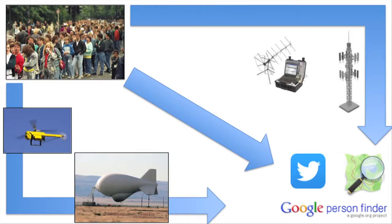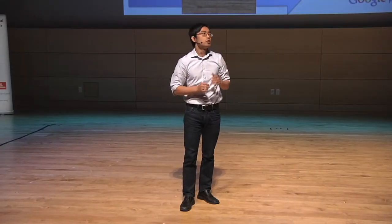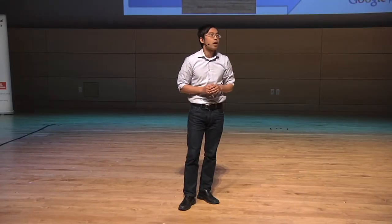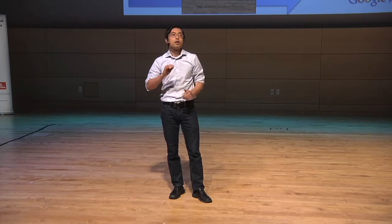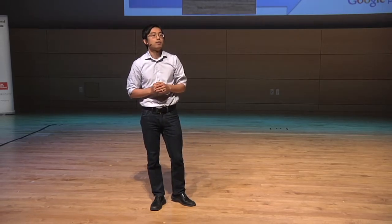We already have some great tools like Google Person Finder that helps deal with this problem. What we don't have is, when the existing comms infrastructure is down, a great way of connecting people quickly to these tools. The existing solutions are either really expensive, like with SATCOM, or they're not very portable, they take too long to deploy, or they don't last very long when deployed, like in the case of micro UAVs.